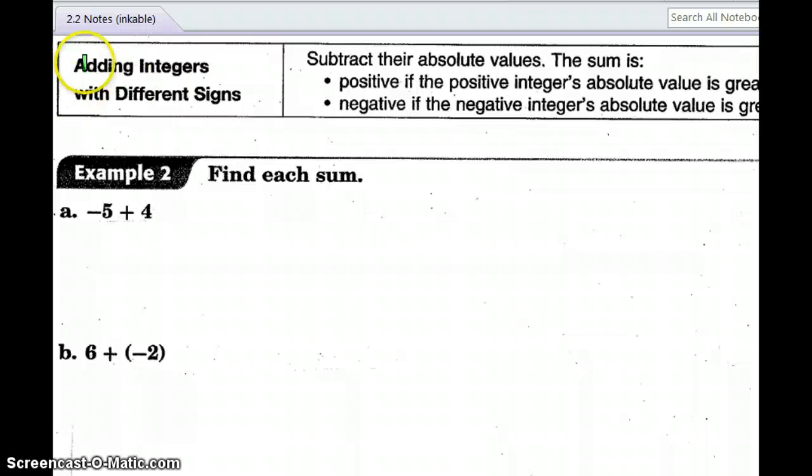Now, what happens when we add integers with different signs? Here's what it says. Subtract their absolute value, and then I always have a bad habit of saying keep the sign of the larger number. But that's really incorrect.